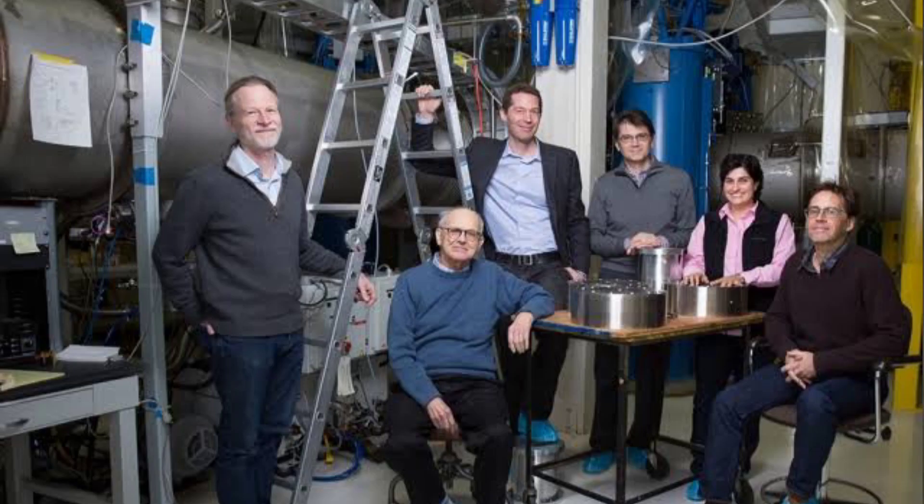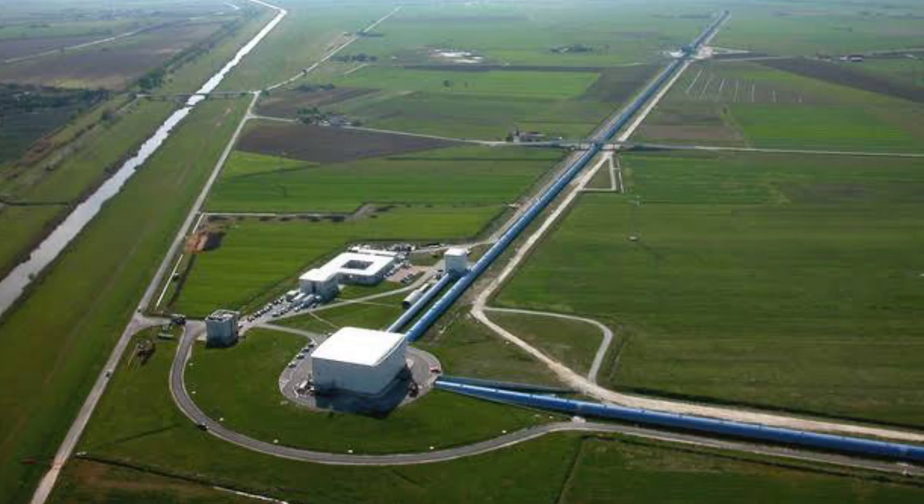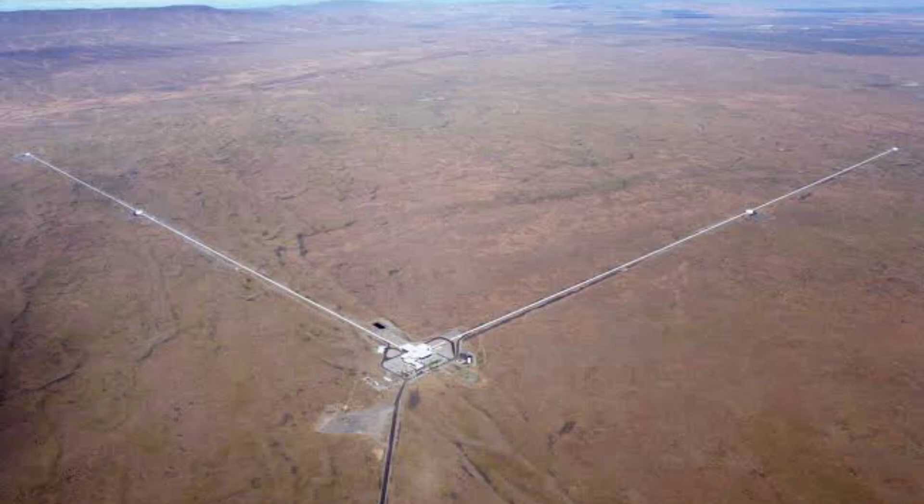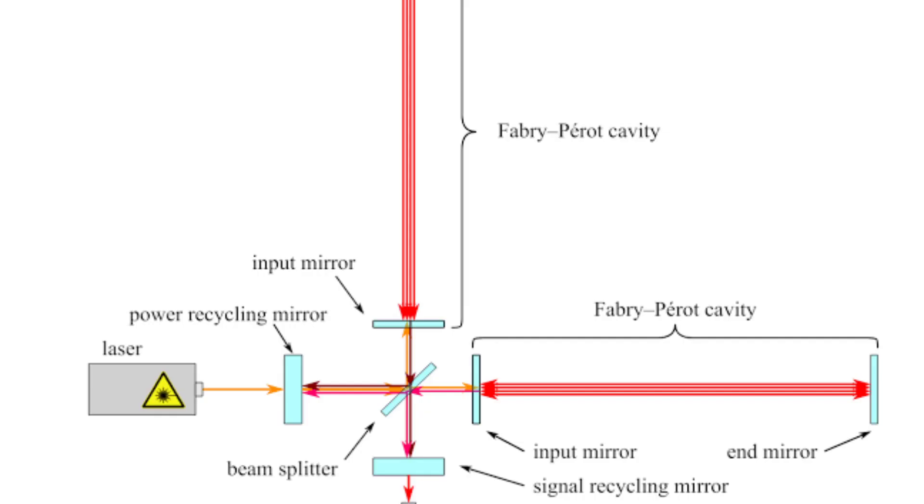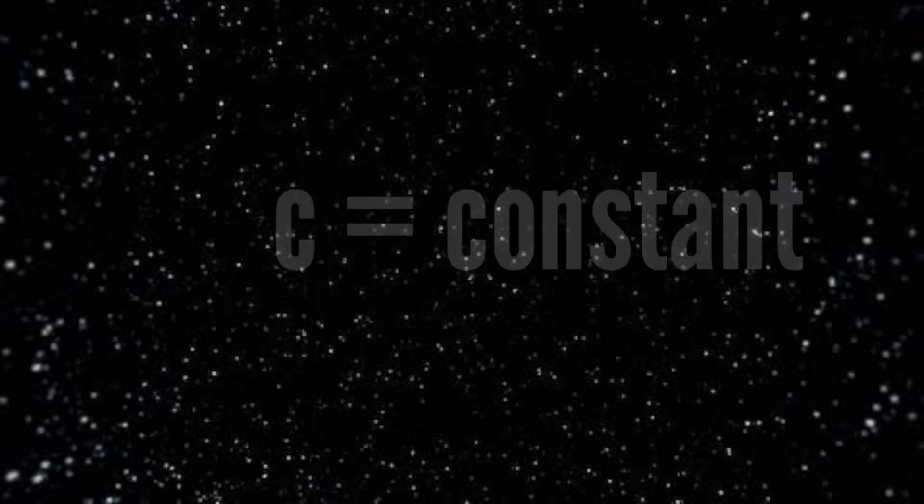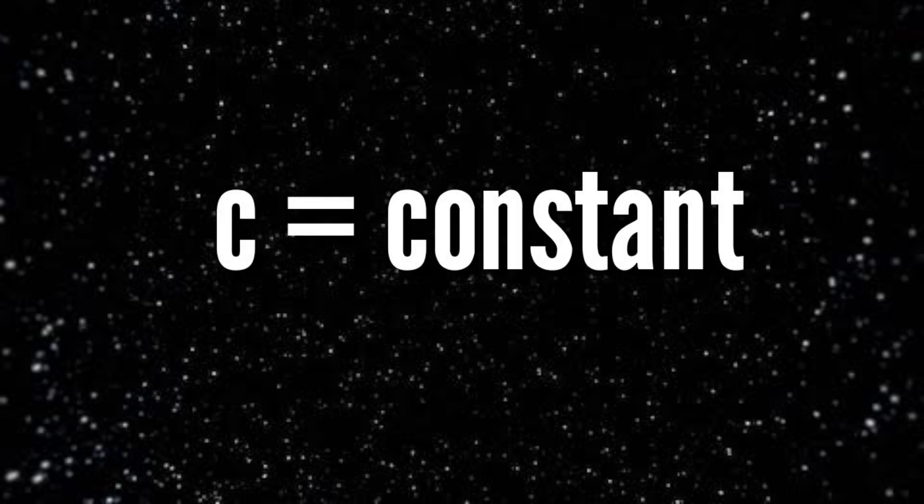To measure this, scientists at LIGO, which stands for Laser Interferometer Gravitational-Wave Observatory, have built four-kilometer-long L-shaped tunnels and use lasers to measure the changes in distance between the ends of the tunnel. Though space stretches and squeezes, the speed of light remains constant. So any change would create an interference pattern of lasers on the screen.